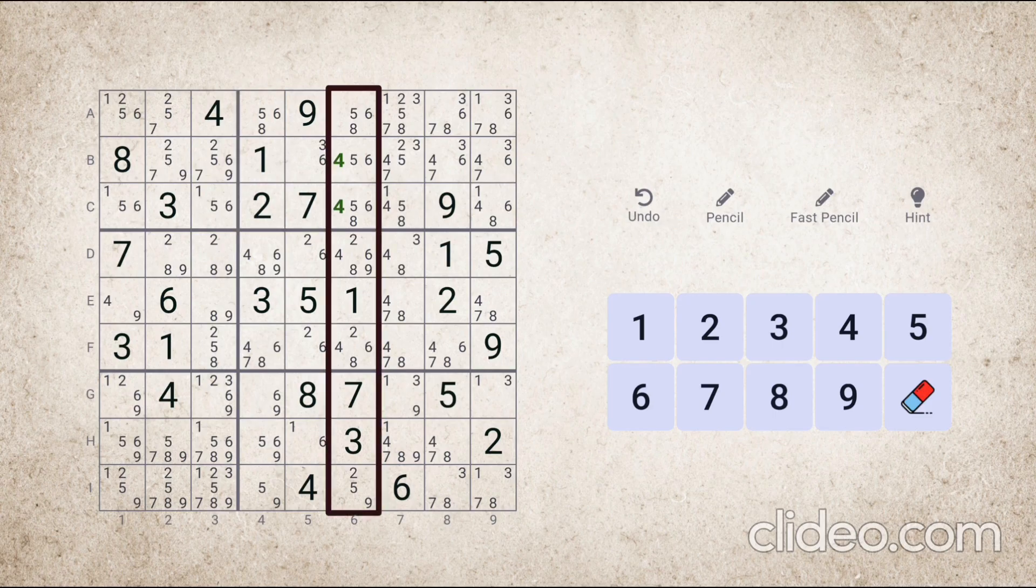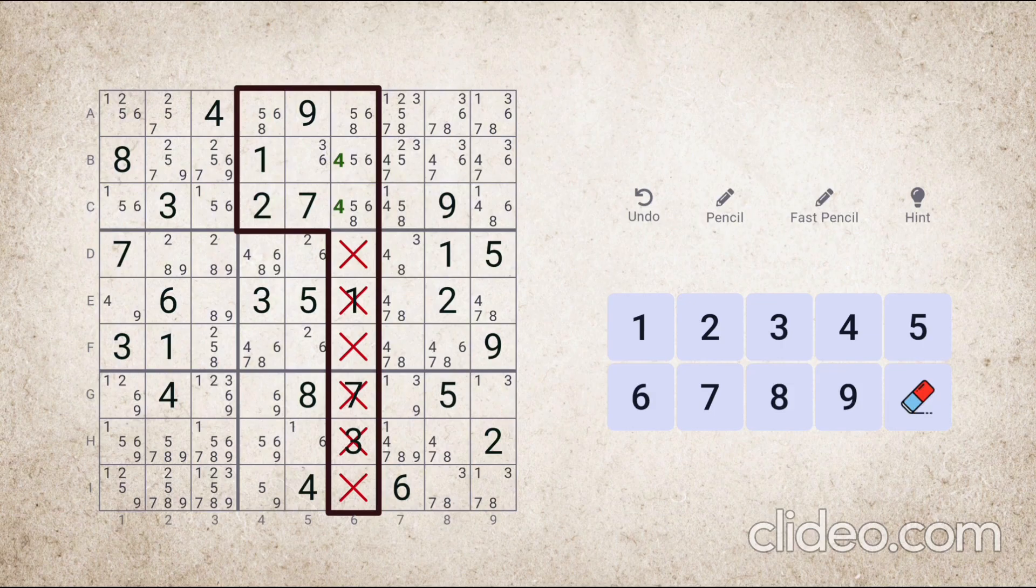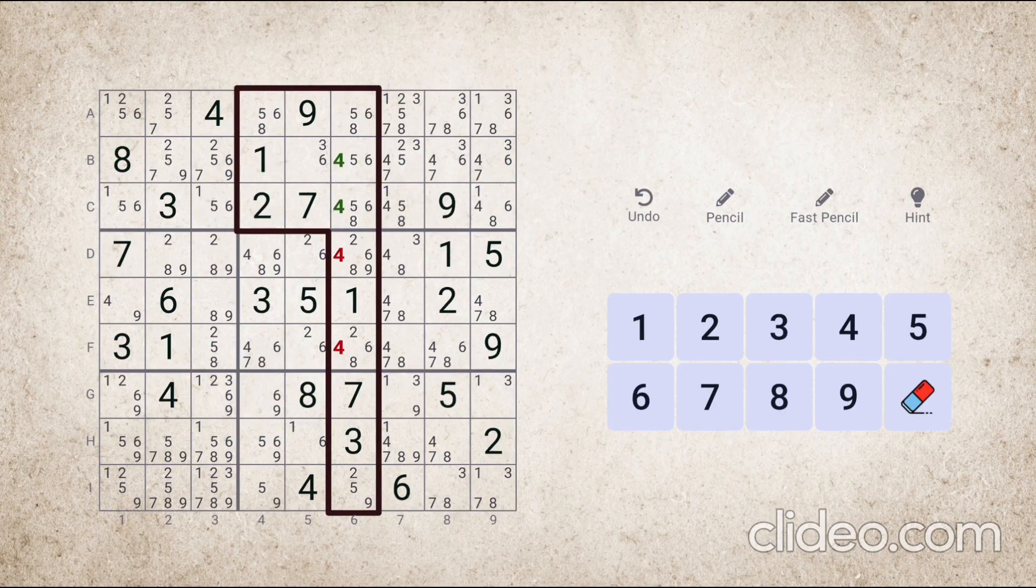So according to the definition of omission that was told earlier, number four cannot be placed anywhere in this column outside this block. So we can easily remove number four from these two places. The reason is same as we explained in the previous example.